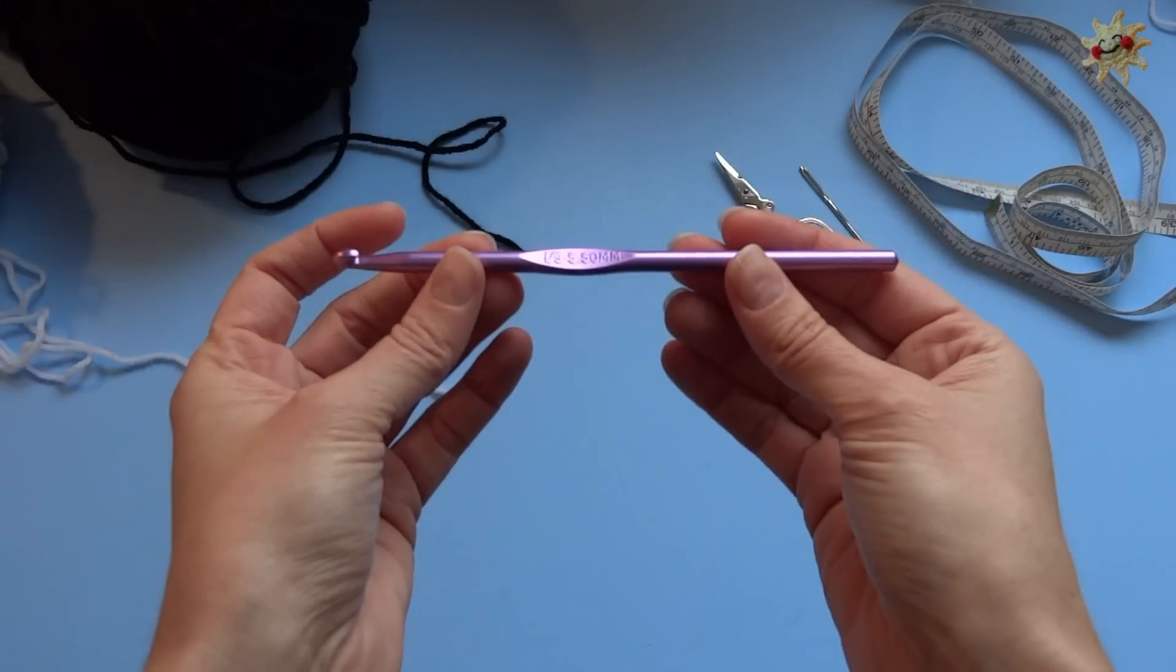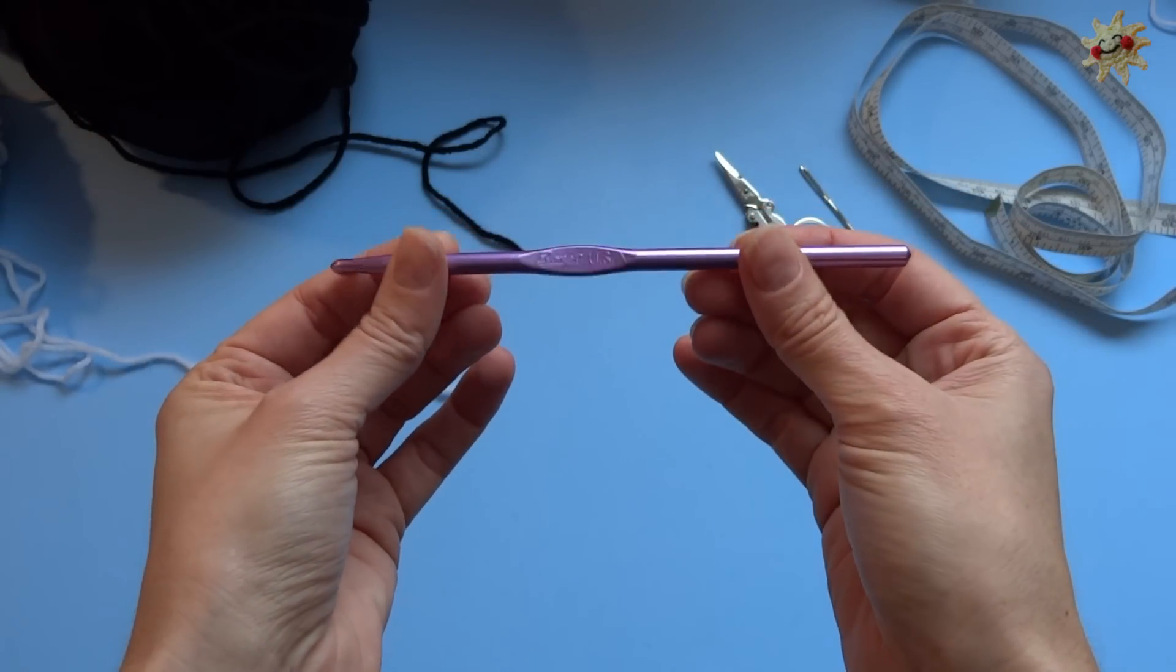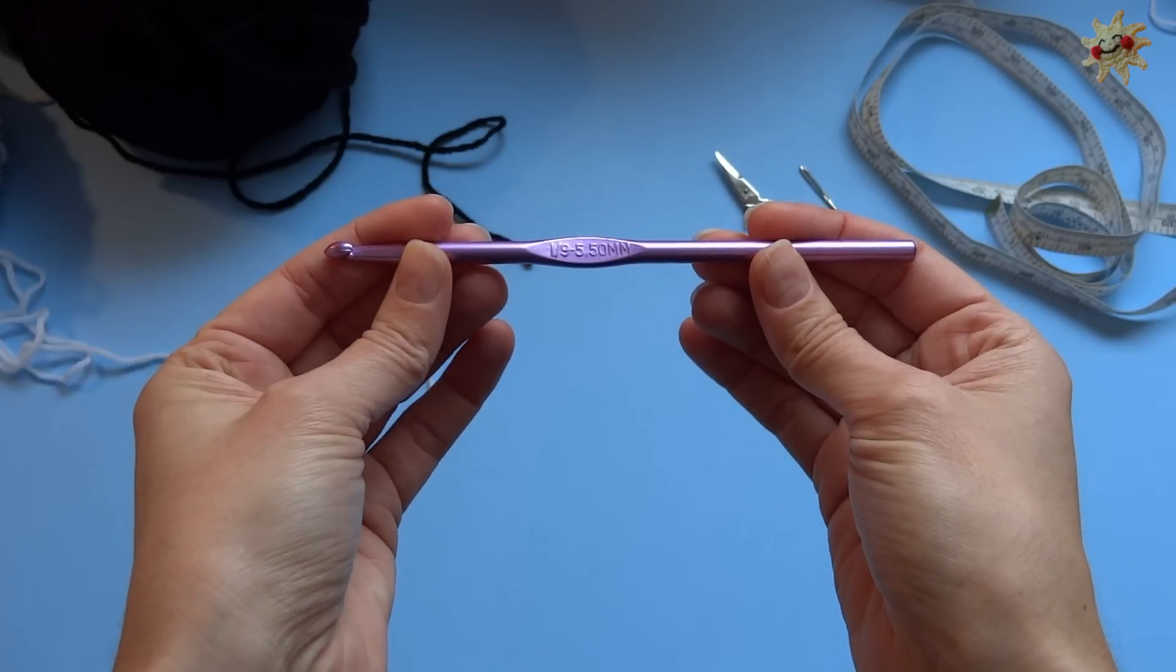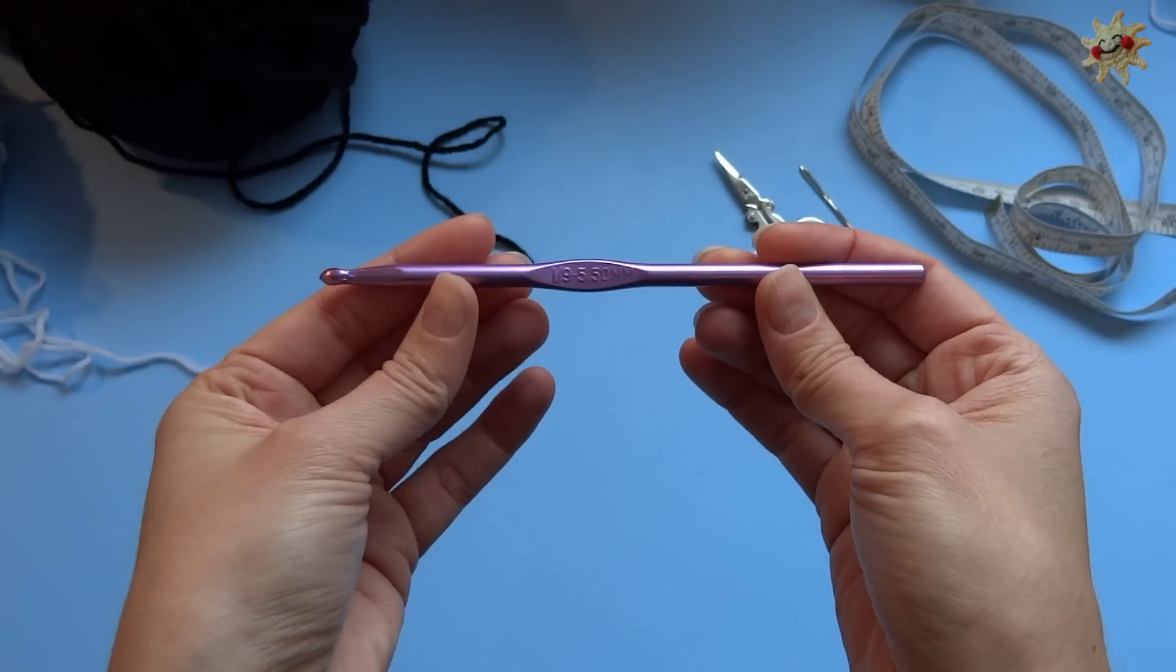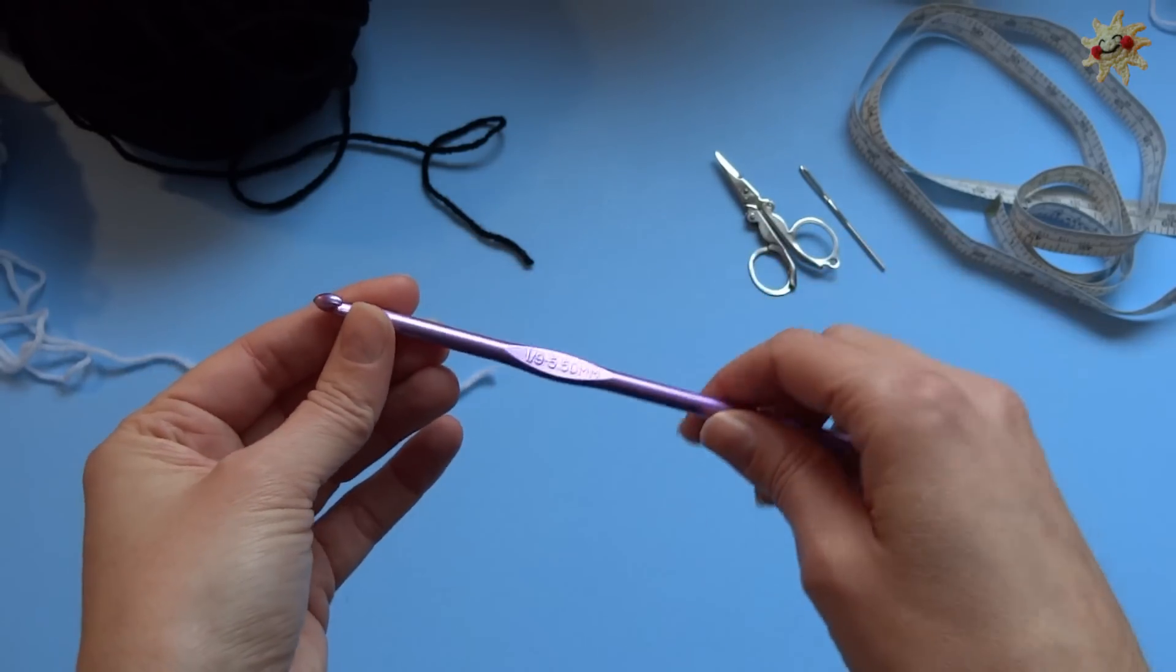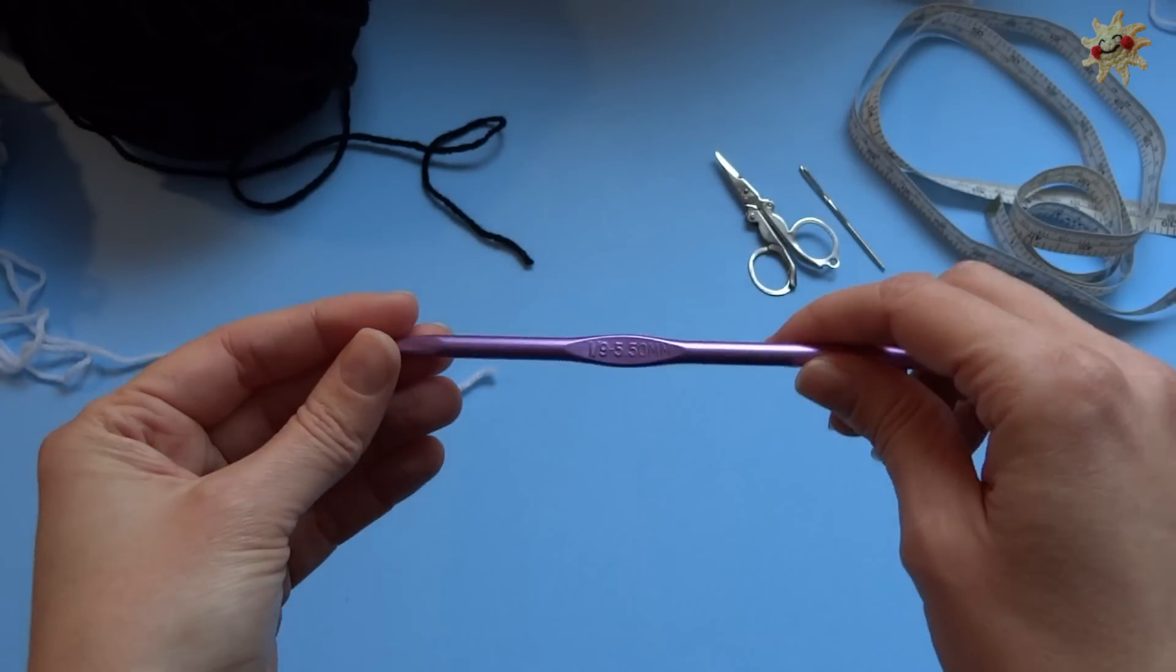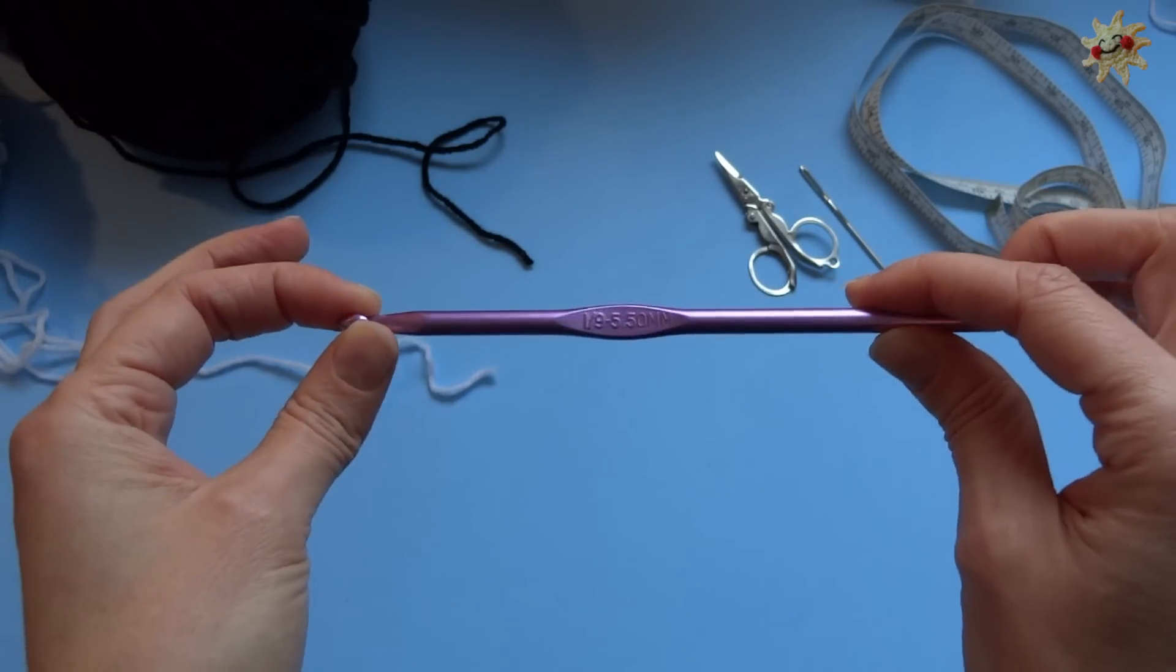I'm going to change things up today and use a bigger hook than I normally do. This is a 5.5 millimeter hook or an I9 depending on what sizing you use. It's a bit larger because I want my stitches just to be a bit bigger, because this is a quick make project.